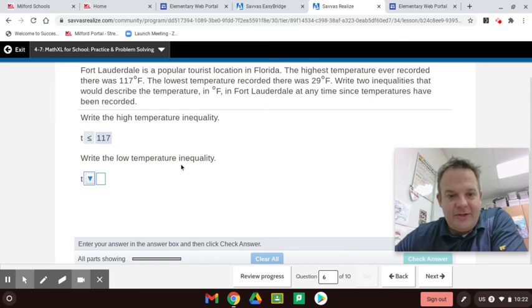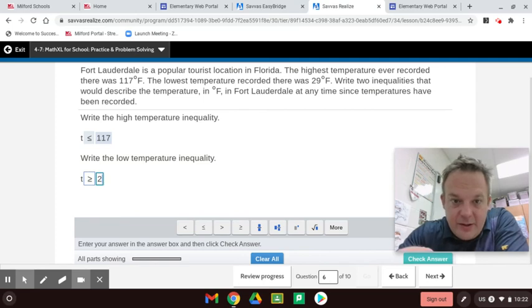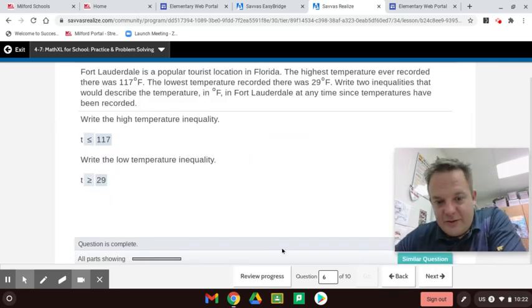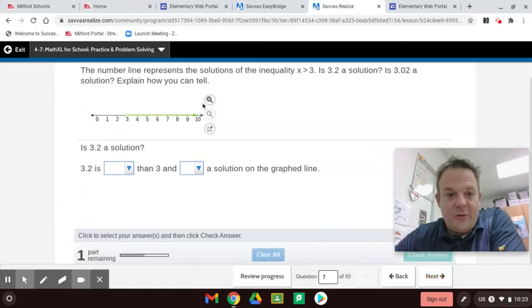Write the low temperature inequalities. The low temperature was 29. It's never gotten below 29. It has gotten to be 29. So, the temperatures in Fort Lauderdale are greater than or equal to, and it does include 29. So, that's pretty cool. It's a good real-life application there of inequalities.